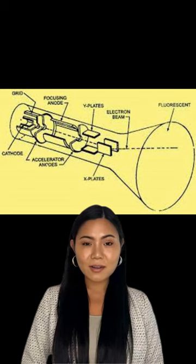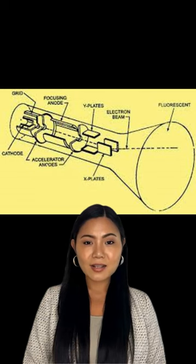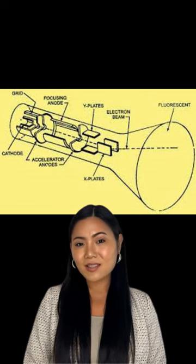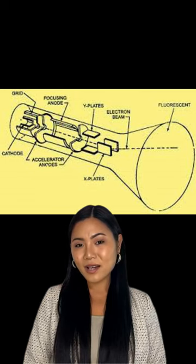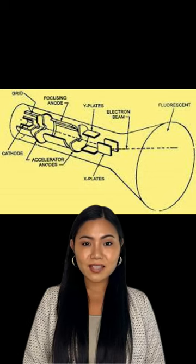A cathode ray tube, often called a CRT, is an electronic display device in which a beam of electrons can be focused on a phosphorescent viewing screen and rapidly varied in position and intensity to produce an image.